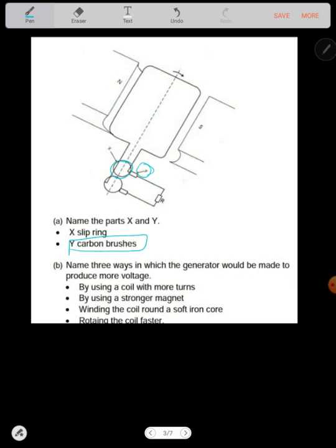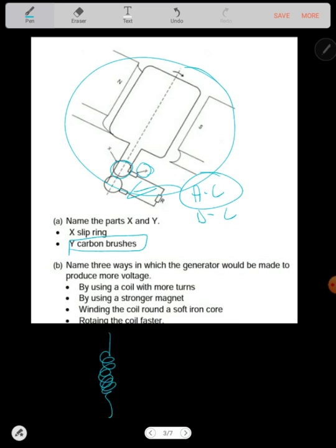Between the terminal, so that the rotation is only variable. Now three ways in which the generator, so remember we have AC generators and DC generators. AC generators are alternating current like this one, then DC are direct currents, they don't have two commutators, those slip rings. Now three ways in which the generator would be made to produce more voltage. The first one is using a coil with more turns. When you use the coil with more turns, this coil has got more turns than this. That means for every coil there's more current flowing.